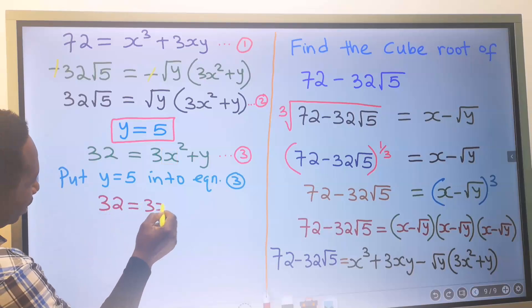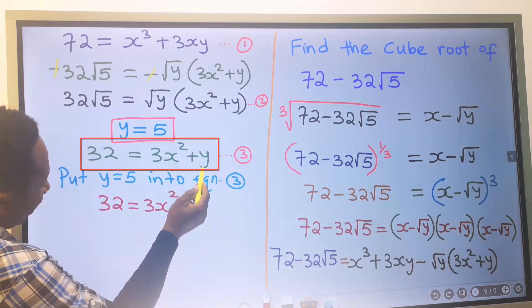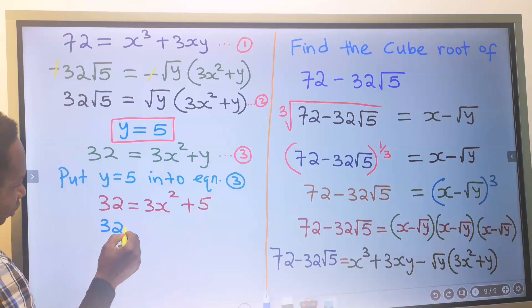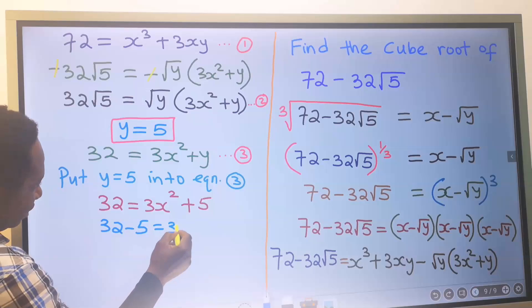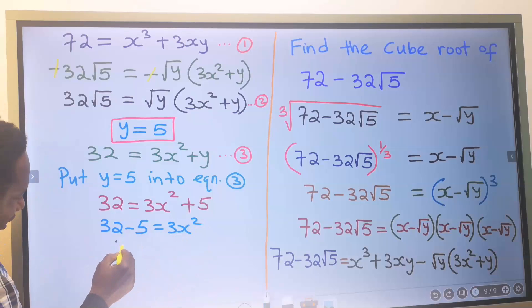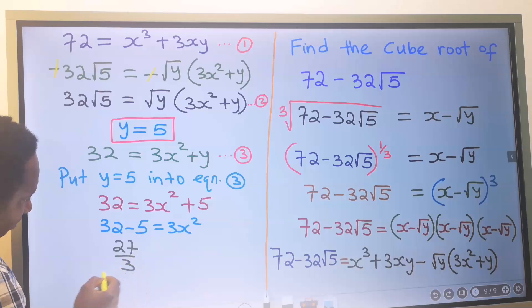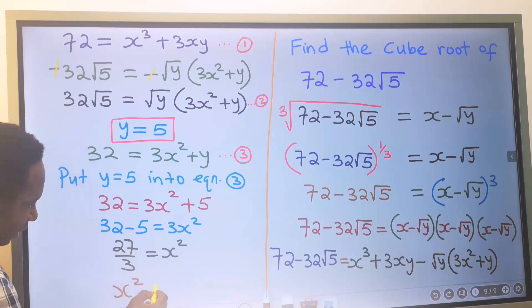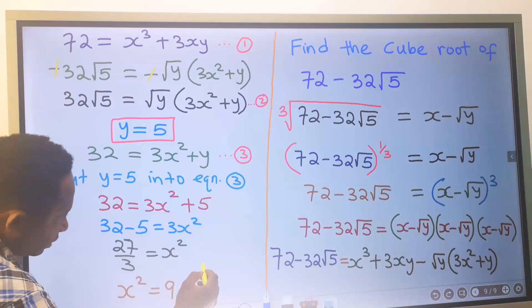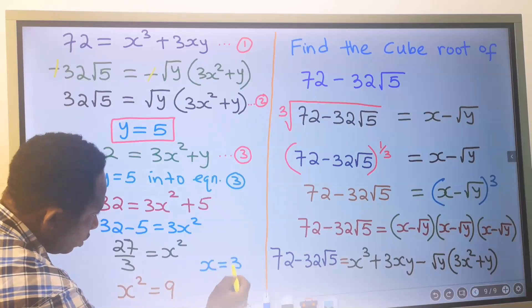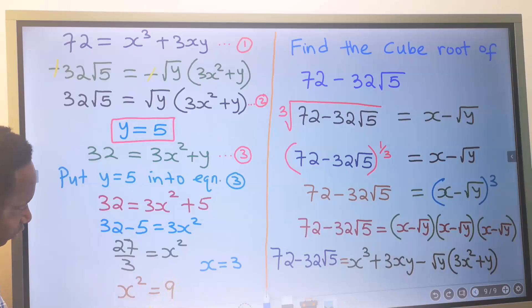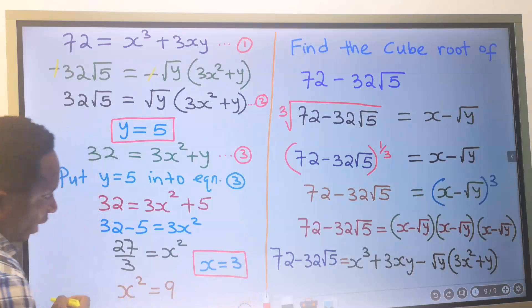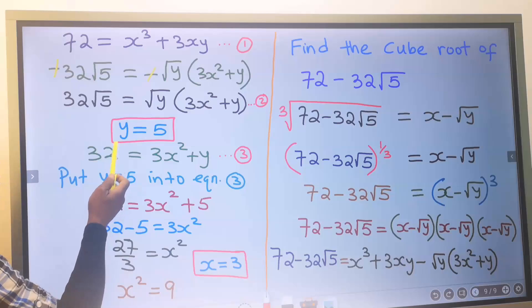Putting y equal to 5 into equation 3 to find x: 32 equals 3x squared plus y, but y is 5, so 32 minus 5 is 3x squared. This gives 27 divided by 3 equals x squared, and x squared is 9. That means our x is equal to 3, because the square root of 9 is 3. So x is 3 when y is 5.